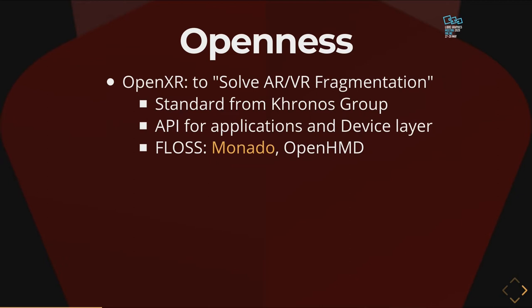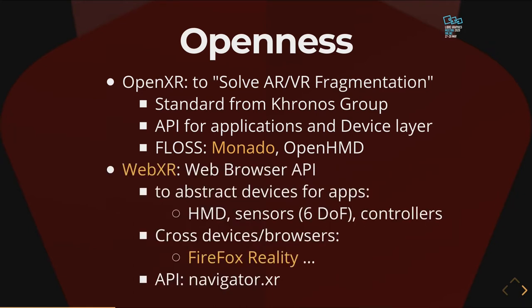Let's talk about openness of immersive reality. Two major projects: OpenXR is a standard from the Khronos group that wants to solve fragmentation between augmented reality and virtual reality drivers, and top-level layers for creating middleware applications. An implementation is Monado from Collabora, which uses an open mounted display. Similarly on the web, we have a high-level API to provide abstraction to device or application. The sensor provides 6 degrees of freedom indicating the user's position, and controllers to pick or interact with objects. You can create applications that run on different devices, different browsers — Firefox Reality is one browser implementing WebXR through the Navigator XR object.